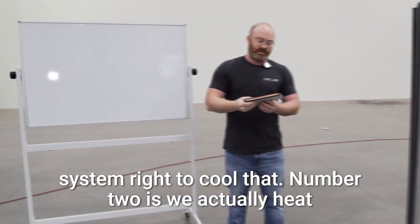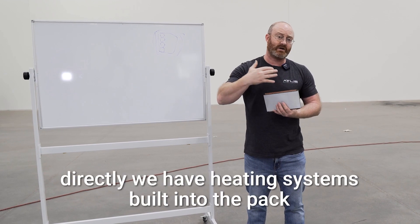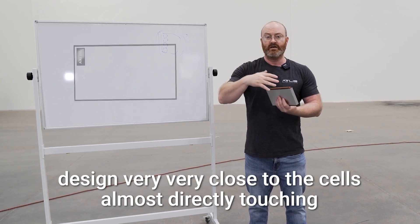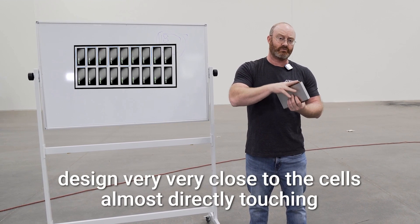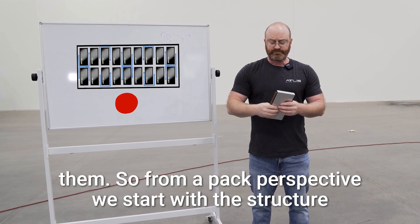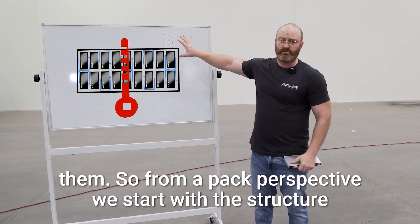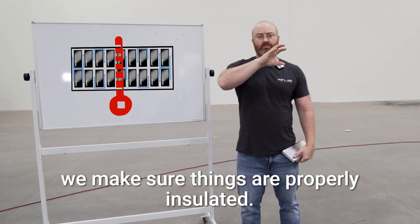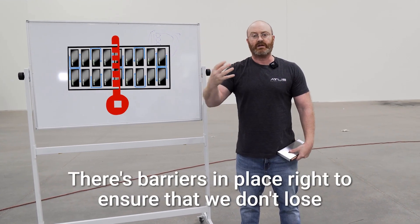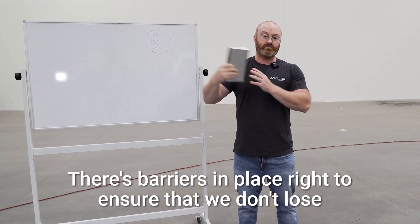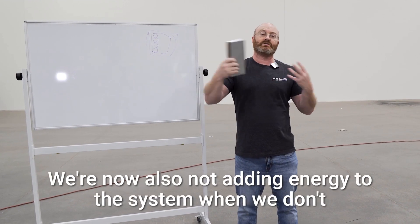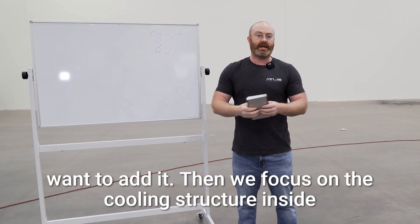Number two is we actually heat the pack directly. We have heating systems built into the pack design very close to the cells, almost directly touching them. From a pack perspective, we start with the structure, we make sure things are properly insulated. There's barriers in place to ensure that we don't lose energy when we don't want to lose it. We're also not adding energy to the system when we don't want to add it.